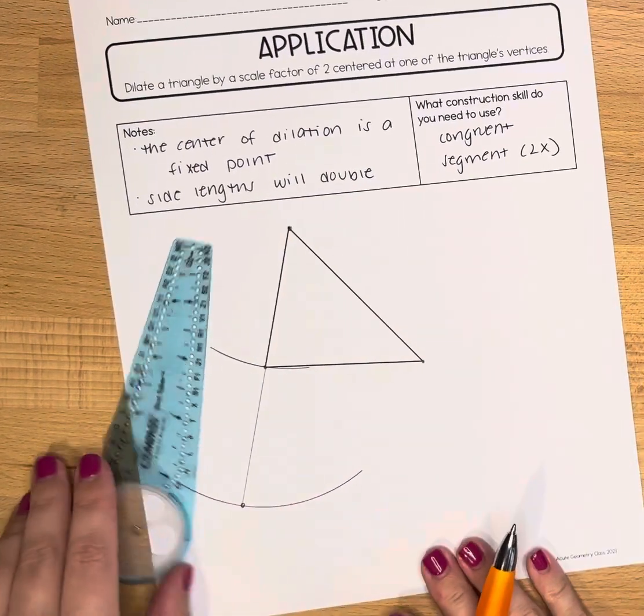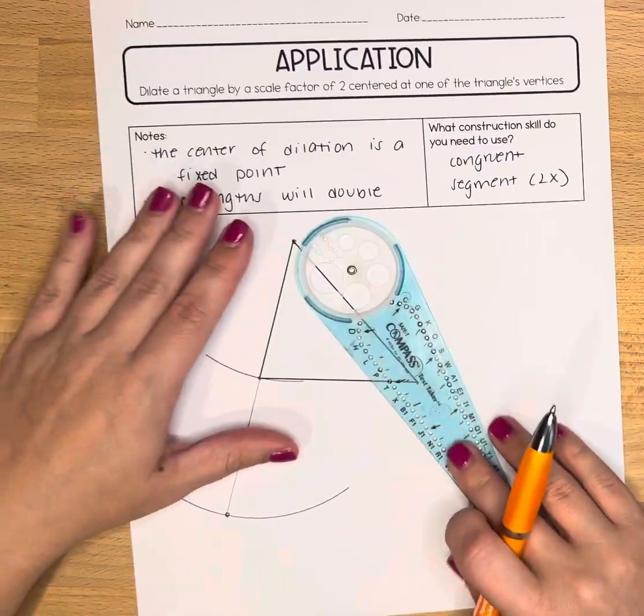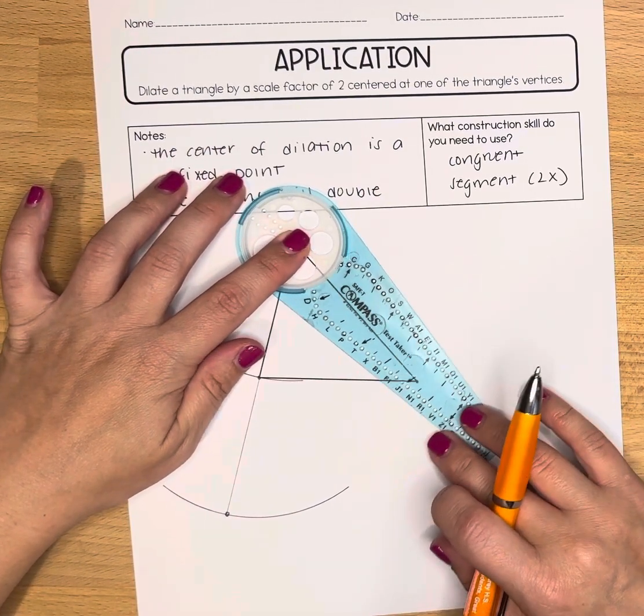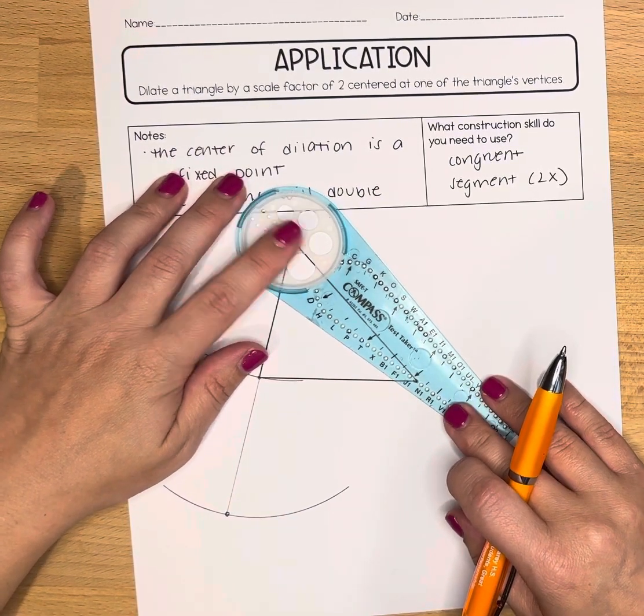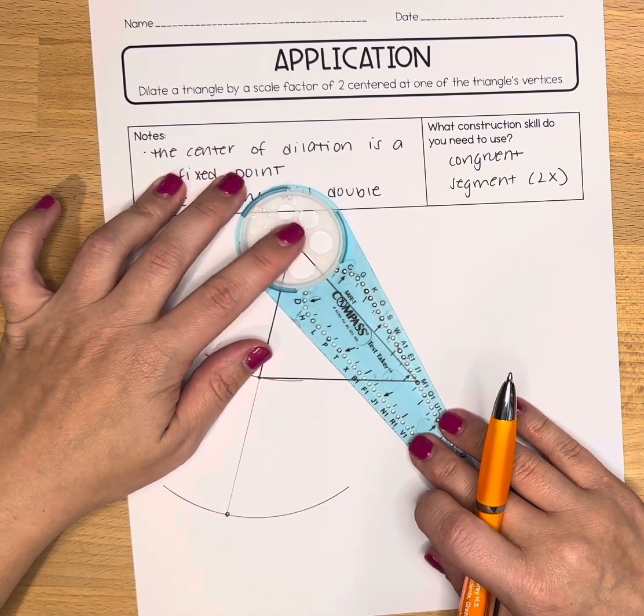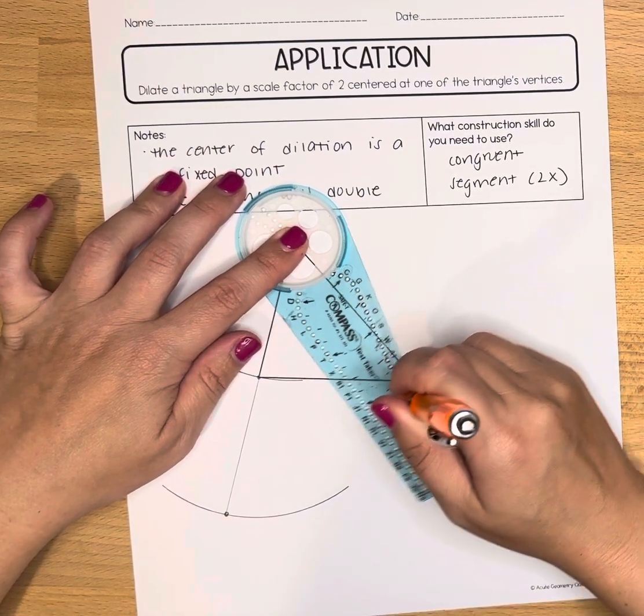And now we're going to repeat that same process over here with the other side. Gold ring on the starting point, measure to find a point that lines up best with the other endpoint. Okay when you have one you're going to make an arc.